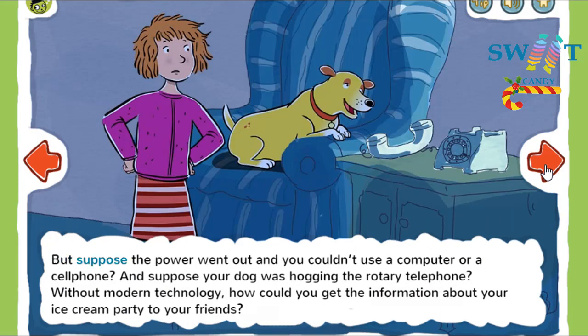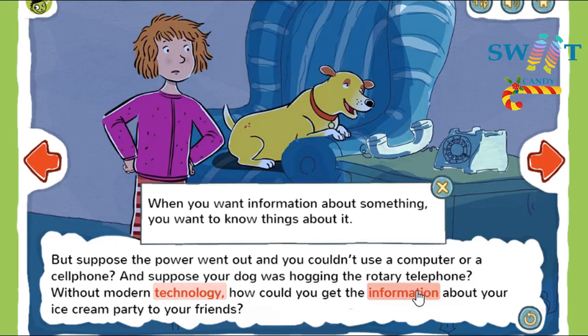But suppose the power went out and you couldn't use a computer or cell phone. And suppose your dog was hogging the rotary telephone. Without modern technology, how could you get the information about your ice cream party to your friends? When you want information about something, you want to know things about it. When a book has information about fish, it has facts about fish.